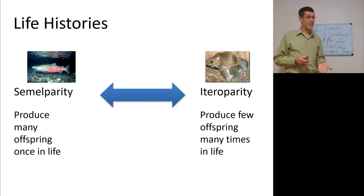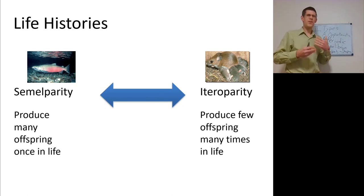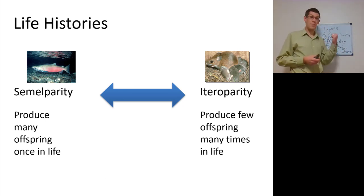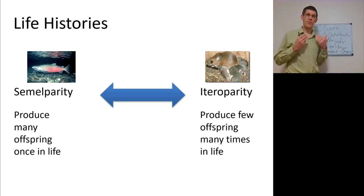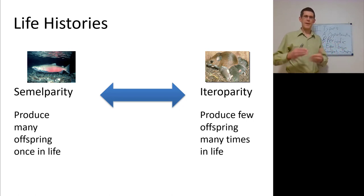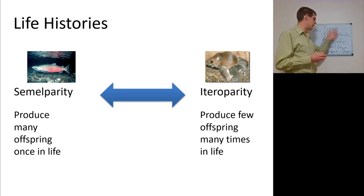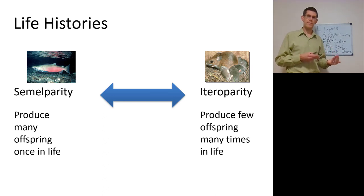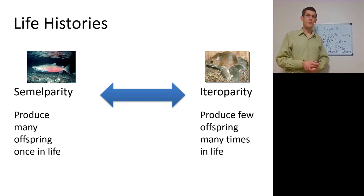Which strategy is optimal? It depends on the organism and the environment. It's difficult to compare a salmon and a mouse and say which is better. Some salmon swim upstream, deposit eggs, and return downstream — not as many eggs, but they can do it multiple times. That might be better given the environment. Evolution will select for whatever is best for that organism: what is available, what variation exists in the life history, and what is ultimately optimal. Life histories are many and varied, and we'll cover more in another lecture, getting more into plants.